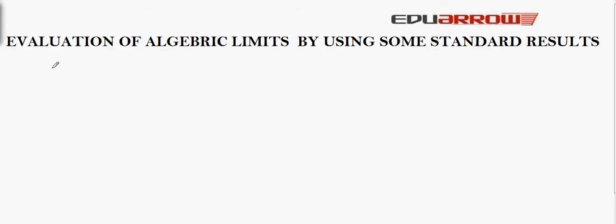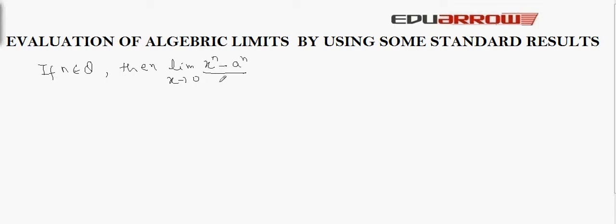Now let us consider the evaluation of algebraic limits by using some standard results. The standard result is: if n belongs to Q (rational numbers), then limit x tends to a of (x^n − a^n) / (x − a) = n · a^(n−1). So if the expression is of this form, we can directly write the result as n · a^(n−1), where n is any rational number.